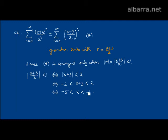In the interval (-5, -1), |x+3|/2 will be less than 1. But if this expression is less than 1, which is if the ratio is less than 1...